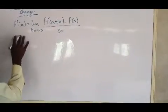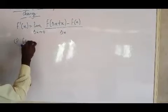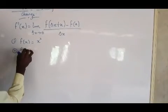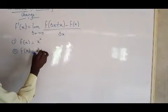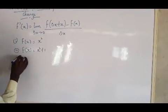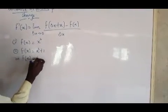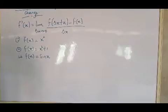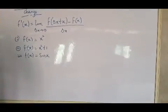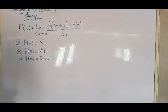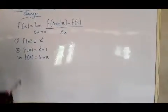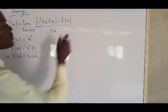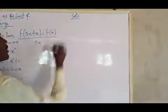The first example I'll be looking at is f of x equals x squared. The second one is f of x equals x squared plus one. And the third one is f of x equals sine x. We call this the first derivative. Follow me as I explain.